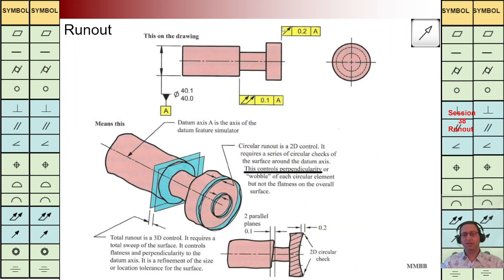Here again at top, we are going to implement this run out — tz is 0.2, back to A axis — and for each cross section we are going to check it. At the bottom we can see we are going to check perpendicularity or flatness for each cross section individually, not for the whole surface. It is not 3D control; it is 2D control.